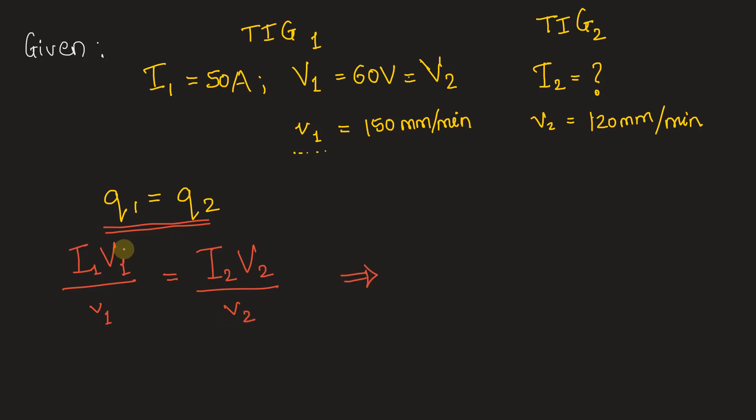To simplify this equation, we can cancel out V₁ and V₂ on both sides because they are equal. We have I₁ = 50 ampere divided by welding speed 150 millimeters per minute, equals I₂ (unknown) divided by welding speed 120 millimeters per minute.